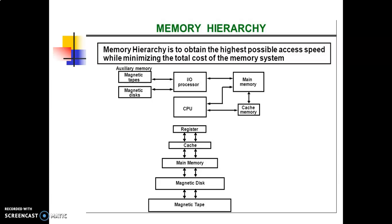Dynamic RAM stores the binary information in the form of electric charge applied to capacitors. The capacitors are provided inside the chip by MOS transistors, and the stored charge on the capacitors tends to discharge with time, so the capacitors must be periodically recharged by refreshing the dynamic memory.